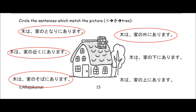Ki wa, as for the tree, ie no shita. There's the ground on top and it's indicating something underneath. So we know that's underneath of the house. Location particle ni, to indicate it's at underneath the house — arimasu, it exists. So the tree exists at underneath the house. In other words, the tree is under the house. No — that is not right.